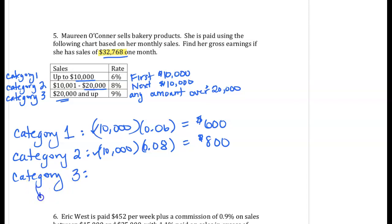So to find out how much sales are in Category 3, we're going to take our total sales of $32,768 and subtract the $20,000 in sales that were already paid, or basically where that comes from the previous high end, and that gives us that we have $12,768 in sales for Category 3.